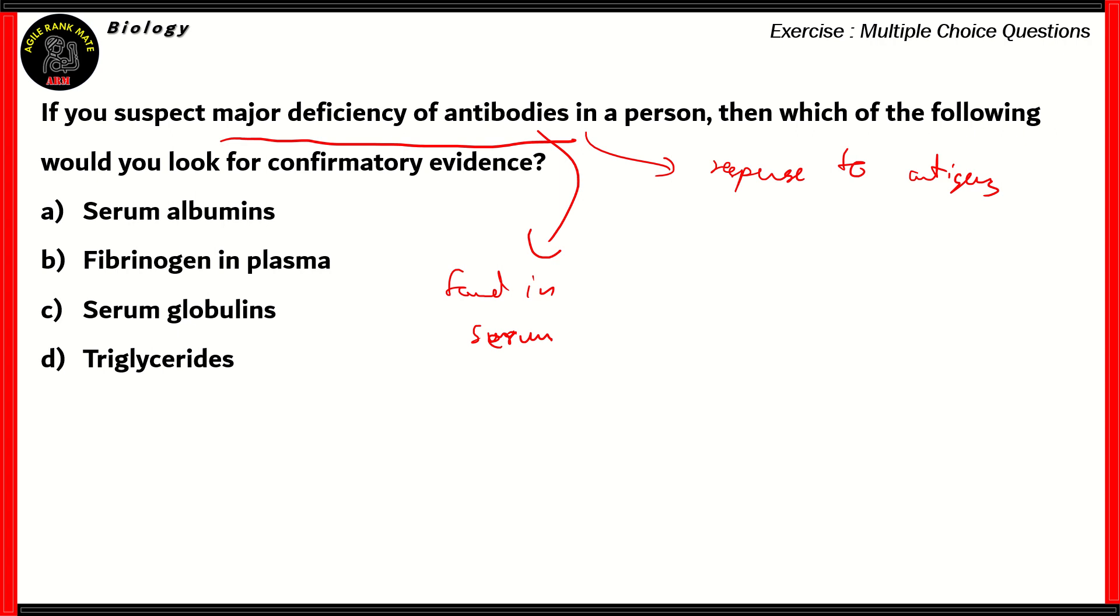Now, since they're found in the serum, you can either consider them to be serum albumins or serum globulins. So options B and D are incorrect. Now, what about the antibodies themselves? What about the examples? If you look at examples for antibodies, you get IgA, IgB, etc. So basically, these are immunoglobulins. So these are also called gamma globulins. So therefore, option C, serum globulins, turns out to be the right option.